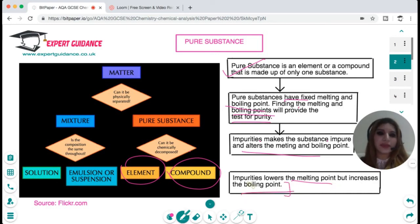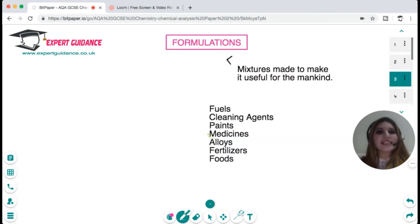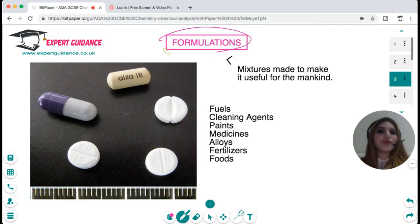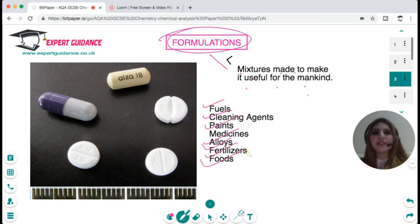Pure substances are not always useful because in pure substances you do not find all the properties that you require, so you need to mix a pure substance with some other substances and make a formulation. A formulation is a mixture made to make it useful for mankind, for example: fuels, cleaning agents, paints, medicines, alloys, fertilizers, and foods.